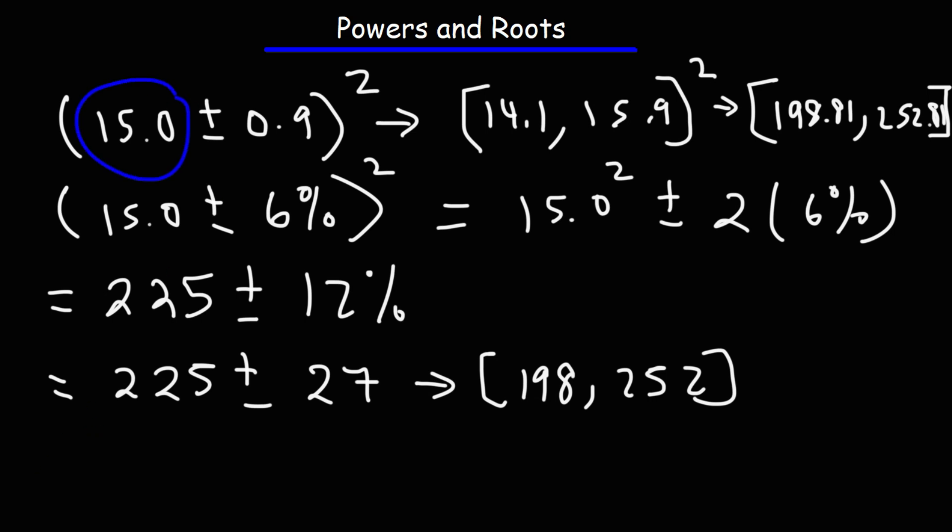So looking at the original problem, our measured value had three significant figures, so we don't have to change 225. However, our uncertainty had one significant digit. Here we have two. So what we could do is we could round up to 30. And if we do that, 225 plus 30 will extend the range to 255, which means this answer will be included in that range. So this will be the final answer for this particular problem.